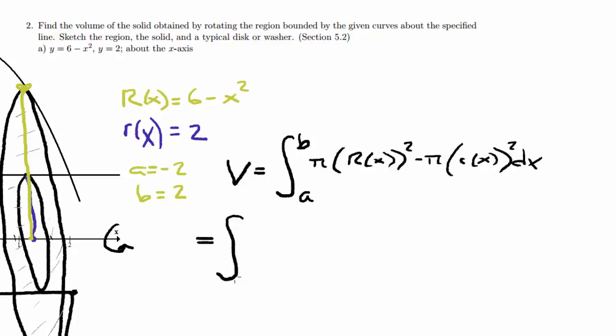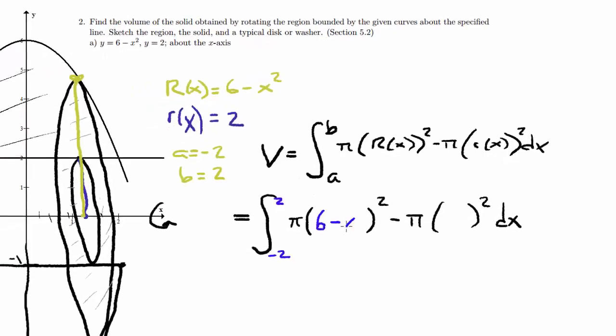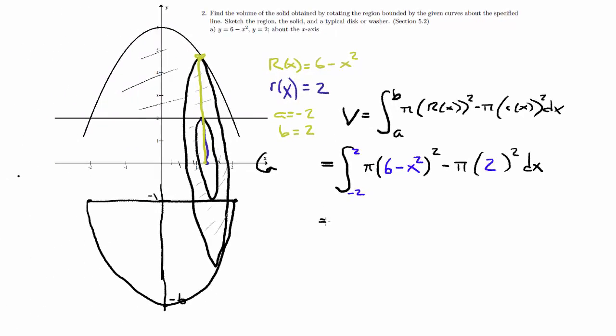That's going to be the integral from negative 2 to 2, pi. Now I'm going to put the big radius in a moment, minus pi, little radius squared. Now big radius was 6 minus x squared, little radius was 2.